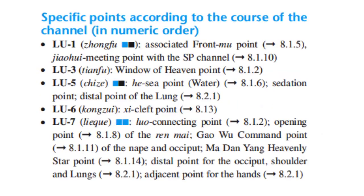Specific points according to the course of the channel in numeric order. Lung 1: the Front Mu point and the Jiao Hui Meeting point with the Spleen Channel. Lung 3: the Window of Heaven point. Lung 5: the He Sea point, the sedation point, and the distal point for the Lung.